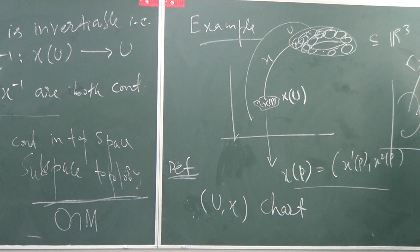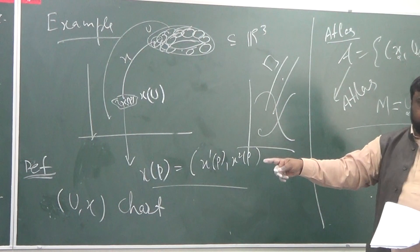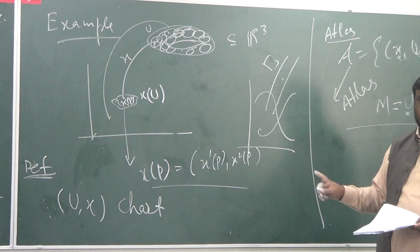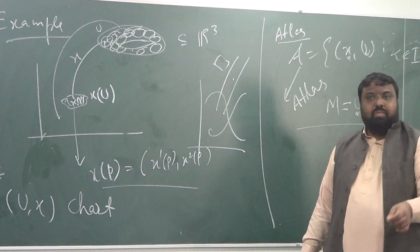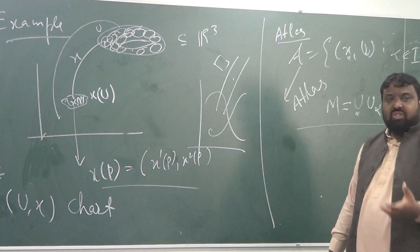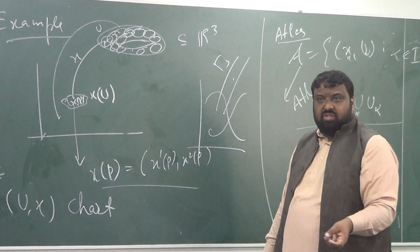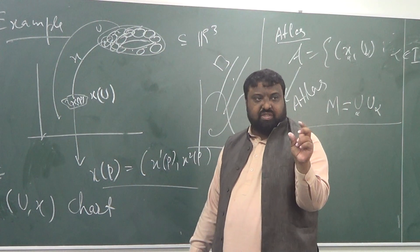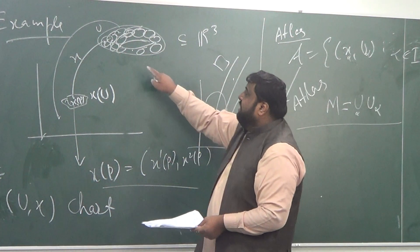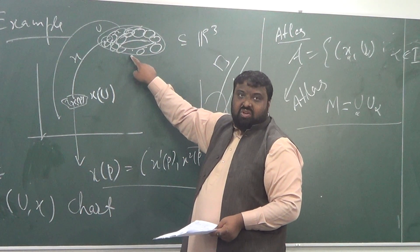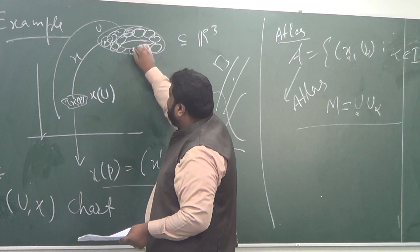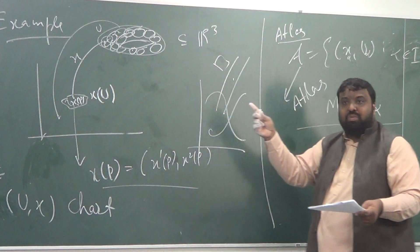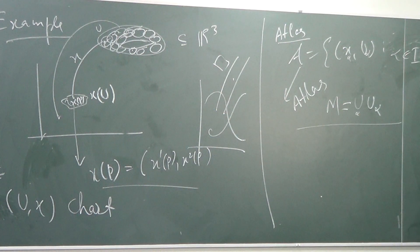What would be the open set on the torus? You need to first read about the subspace topology. Since a point on the torus is also in R^3, take an open set in R^3 — which is going to be a small sphere — and the intersection of that sphere with the torus will produce a region. That region is the open set on the torus.